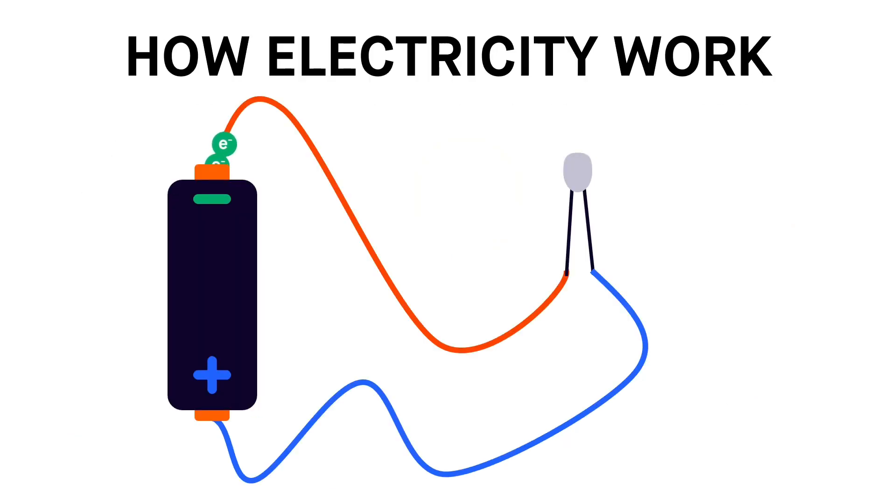Before I can explain how a battery works, I need to tell you about electricity. When connecting a lamp to a battery, it will try to push electrons from the negative terminal to the positive terminal, going through the lamp. When the lamp receives electrons, it will light up.